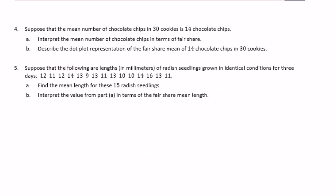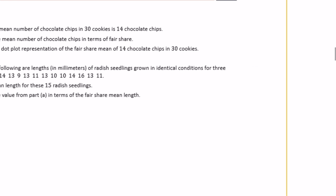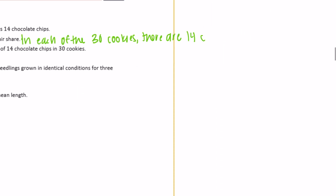Number four: suppose the mean number of chocolate chips in 30 cookies is 14 chocolate chips. Interpret the mean in terms of fair share. That means if there are 30 cookies and the mean is 14 chocolate chips, then each of the 30 cookies would have 14 chocolate chips. So in each of the 30 cookies, there are 14 chocolate chips.